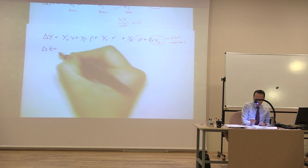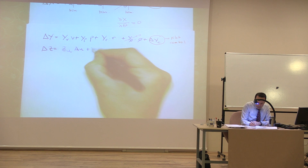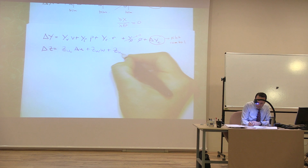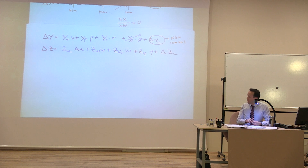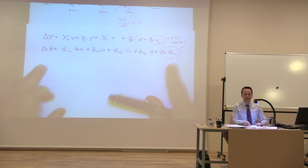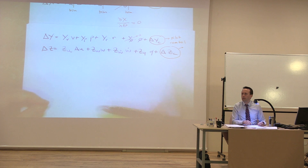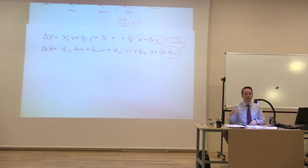Del Z equals Zu times delta U, plus Zw times W, plus Zw-dot times w-dot — because we said this is not small — plus Zq times Q, plus delta Zc for pilot controls. The pilot control affecting Z could be flaps, for example: if you increase flaps, you get a force in the Z direction. A change in elevator will also give a little bit of Z. All these are lumped into delta Zc.